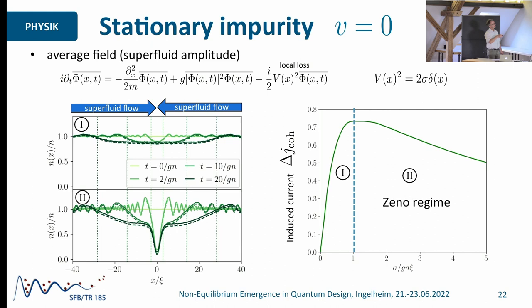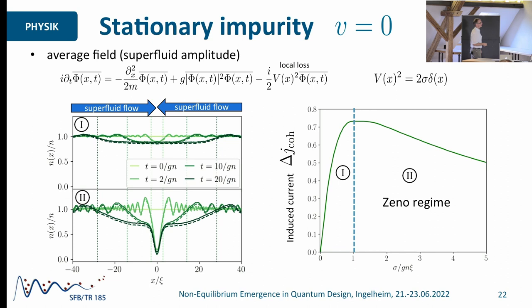But then something else happens. If you crank up the noise even more, a dip forms in this plateau, and the depth of this dip becomes deeper and deeper the stronger the noise gets. As a consequence, the current actually reduces. The reason why the current reduces is because the particles have to move past this point where the density is very low, making it harder for them to flow. Also, the mechanism which kicks out coherent atoms into non-condensate states gets less efficient because the density goes down. So this is a Zeno regime where, despite increasing this dissipative rate, the current goes down and becomes smaller.